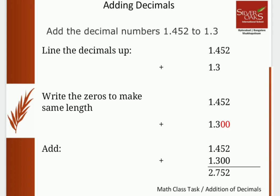Then in step 2, write the zeros where the numbers are missing either in the whole part or the decimal part. Here, since 1.3 does not have the complete numbers as in the first number, we add extra zeros. Now add using the normal addition method and remember the decimal point. So the final answer is 2.752.